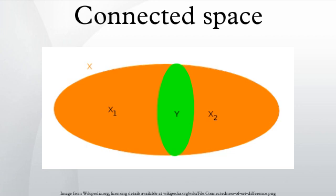Every path connected space is connected. The converse is not always true; examples of connected spaces that are not path connected include the extended long line L* and the topologist's sine curve. However, subsets of the real line ℝ are connected if and only if they are path connected — these subsets are the intervals of ℝ. Also, open subsets of ℝ or ℂ are connected if and only if they are path connected. Additionally, connectedness and path connectedness are the same for finite topological spaces.